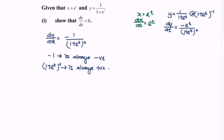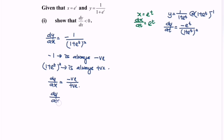So try to imagine: dy/dx will have a negative value divided by a positive value. So for sure we will have a negative value. If the situation is a negative value, then for sure dy/dx is less than 0.